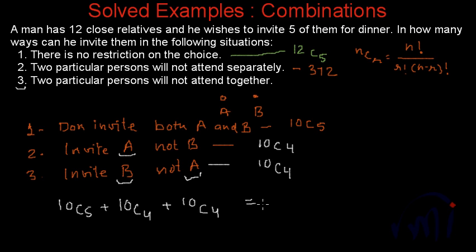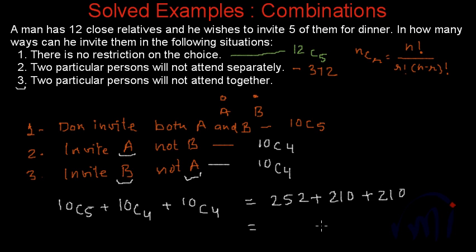The total number of ways equals 10C5 plus 10C4 plus 10C4. The value of 10C5 is 252 and 10C4 is 210, so 252 plus 210 plus 210 equals 672. There are 672 ways in which the third condition — two particular people will not attend the party together — can be satisfied.